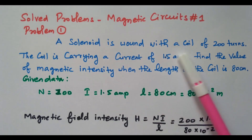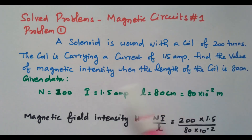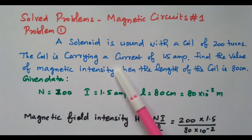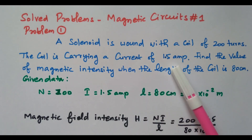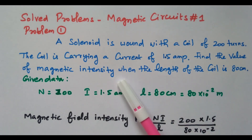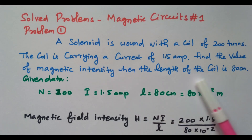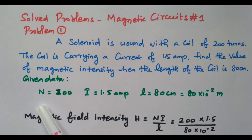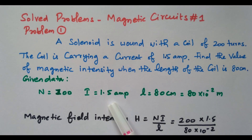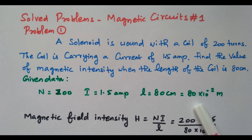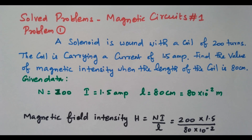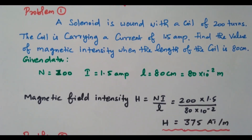A solenoid is wound with a coil of 200 turns. The coil is carrying a current of 1.5 amperes. Find the value of magnetic intensity when the length of the coil is 80 centimetres. The given data are: number of turns N = 200, current I = 1.5 ampere, and length L = 80 cm, which equals 80 × 10⁻² metres.